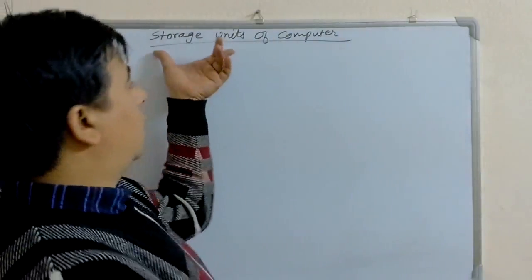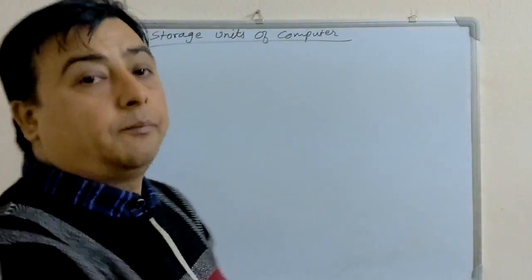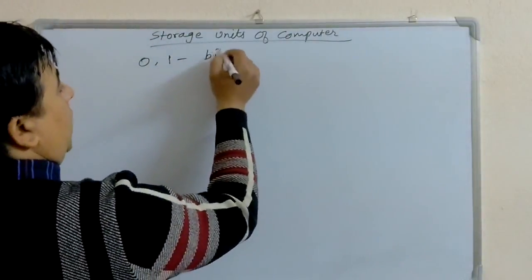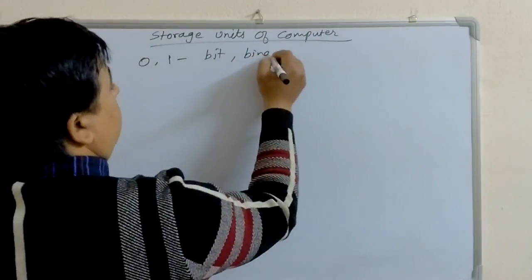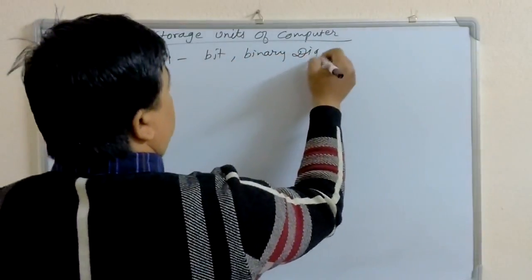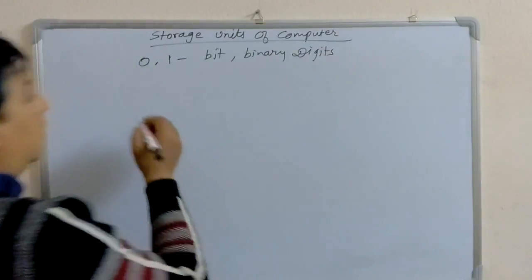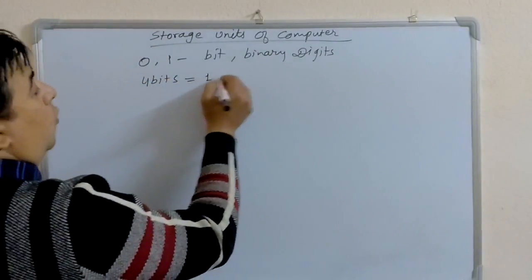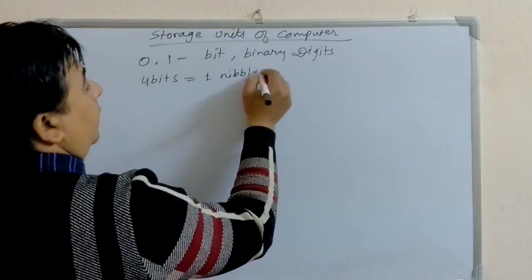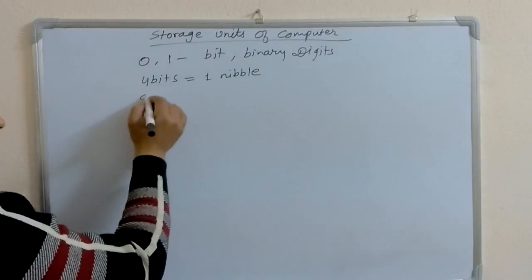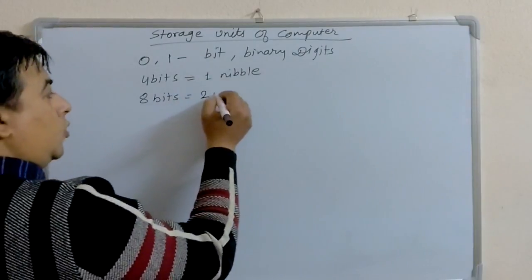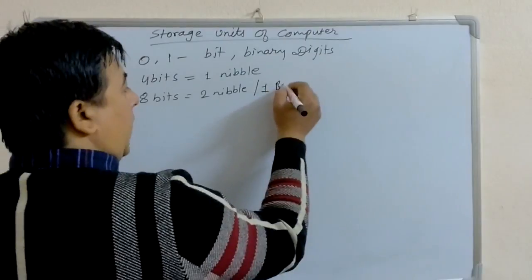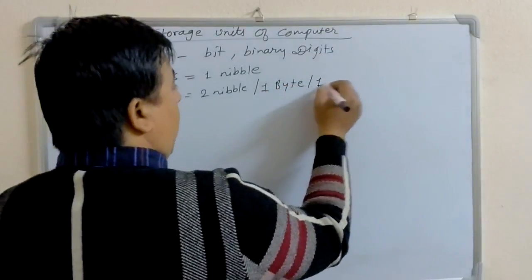Here, 0 and 1 are known as bit or binary digit. 4 bits equals to 1 nibble (level). 8 bits equal to 2 nibbles or 1 byte.